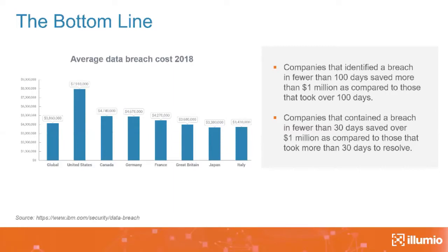Segmentation can reduce your exposure to the spread of breaches and prevent exfiltration of mission-critical data, and it can also reduce your costs. According to 2018 Ponemon Institute averages, the global average cost of a breach is around $3.86 million USD — in the U.S. it's nearly $8 million. Companies that identified and contained a breach quickly saved more than $1 million. Ring-fencing your high-value assets means that even if your network is breached, your most valuable assets are already secured. If someone goes in through your HVAC portal, they will not be able to get to your point-of-sale system — they won't even be able to see it.